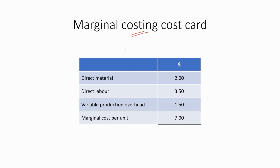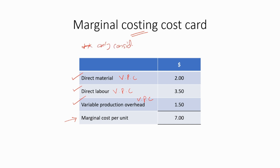This is the Marginal Costing cost card, which can be used to identify the marginal cost per unit. We consider the direct material cost, direct labor cost, and variable production overhead costs. So finally, we can calculate the marginal cost per unit. Direct material is a variable production cost, direct labor is also a variable production cost, and variable production overhead is a variable production cost. So it is really important to only consider variable production costs under marginal costing.